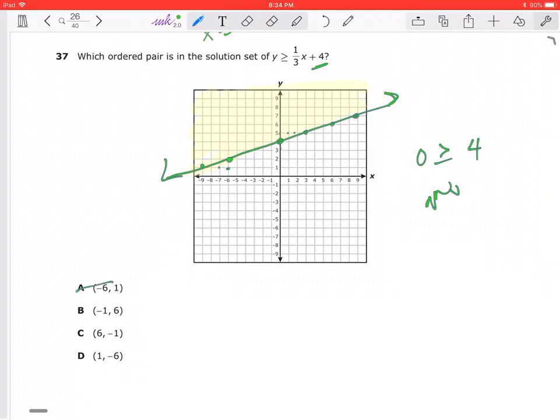Let's look at (-1, 6): 1, 2, 3, 4, 5, 6. That's there and that is an answer choice. Let's check and make sure the other ones aren't true either.